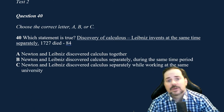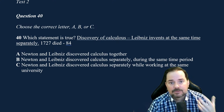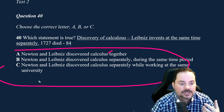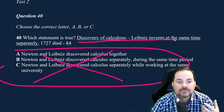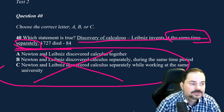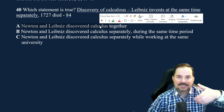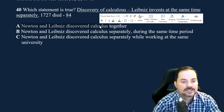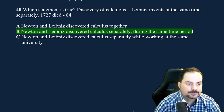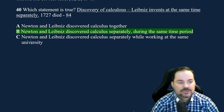Number 40 — multiple choice — the discovery of calculus. The key detail: Leibniz invented it at the same time but separately. Looking at the choices: A — they discovered it together — no. B — Newton and Leibniz discovered calculus separately during the same period — yes. C — separately while working at the same university — no, Leibniz was not at Cambridge. So B is the correct answer.